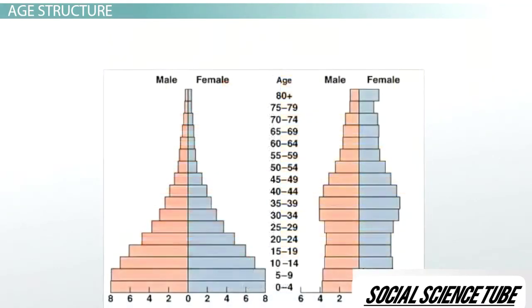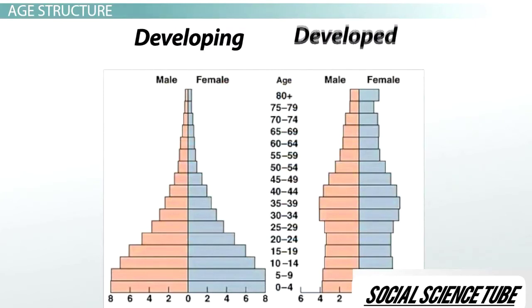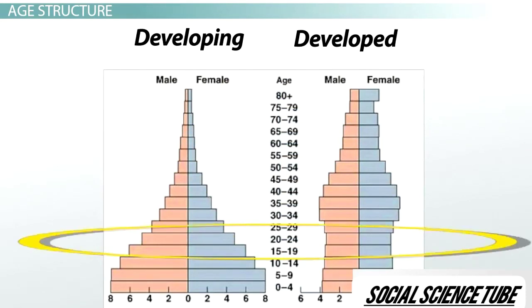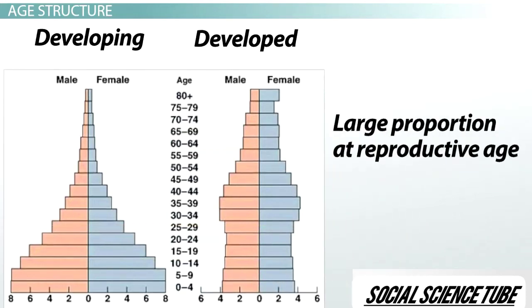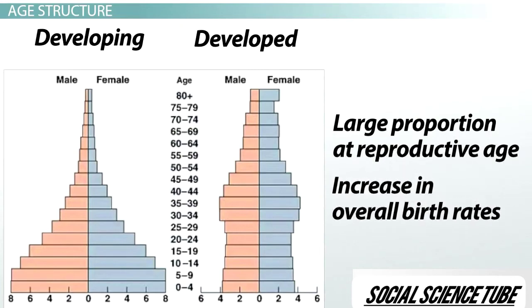Due to high fertility rates and low survivorship, developing countries often have a skewed age structure, with a higher percentage of their overall population in the lower age categories. This results in a median age in the late teens and an age-sex pyramid with very sloped sides due to larger bars at the bottom. This type of age structure has a large proportion of the population at reproductive age, leading to an increase in overall birth rates.